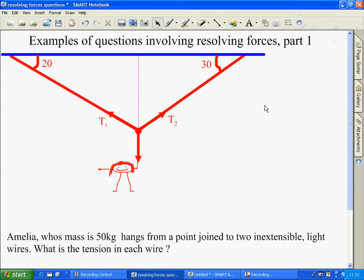Right, so we have Amelia here who's hanging from this point, so we assume equilibrium. That means that the forces vertically are equal and the forces horizontally are equal. There's no resultant force here at all.